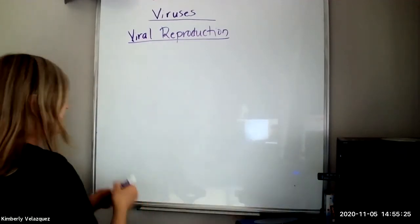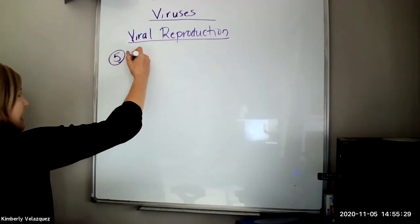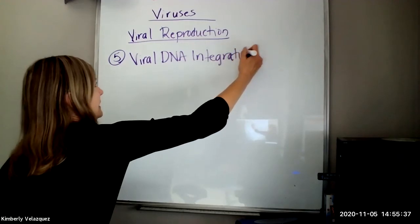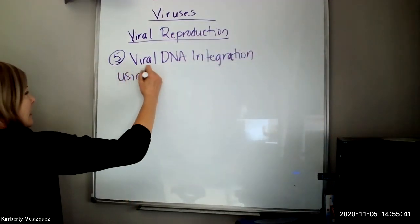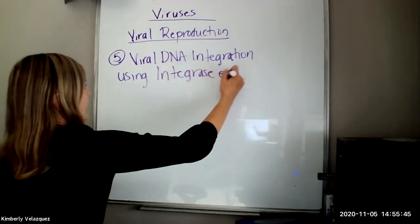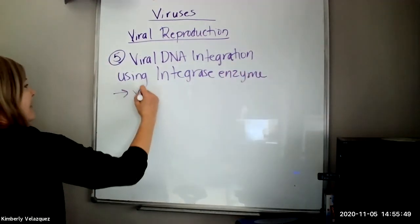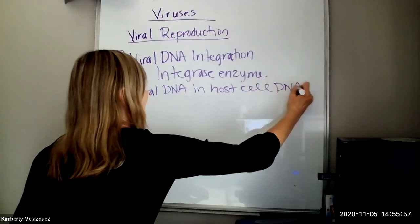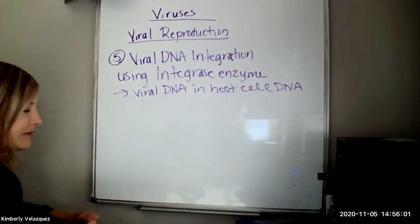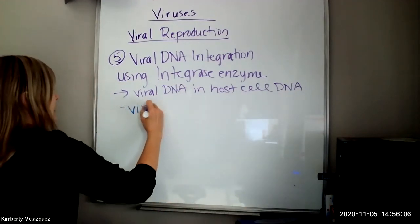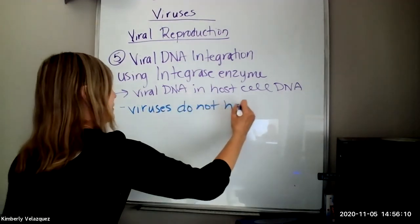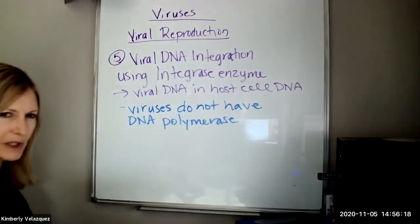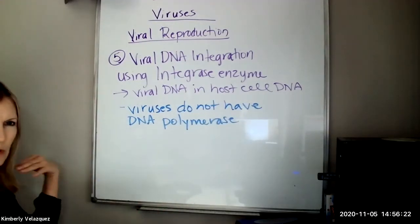The next step is the virus needs to integrate its DNA into the host cell DNA. I think I'm on number five. But it's viral DNA integration. And that is using another enzyme that the virus brought with it called integrase. So now that viral DNA is in the host cell DNA. And when the host cell replicates its DNA, it's going to replicate the viral DNA. Why does the virus need to do this? It's because viruses do not have DNA polymerase. They need host cell DNA polymerase in order to copy their DNA along with all of the other machinery that's used to replicate DNA.